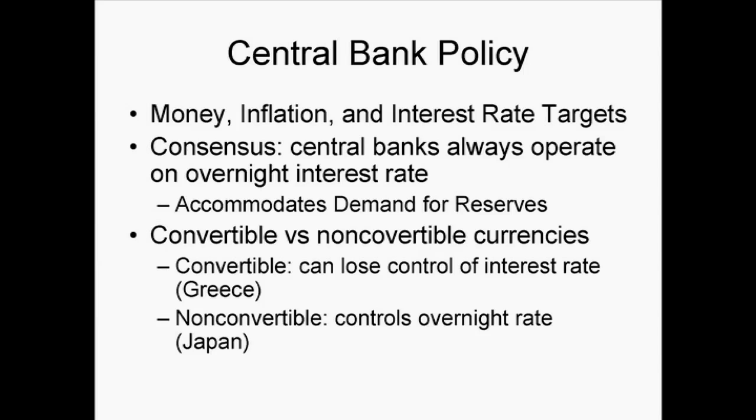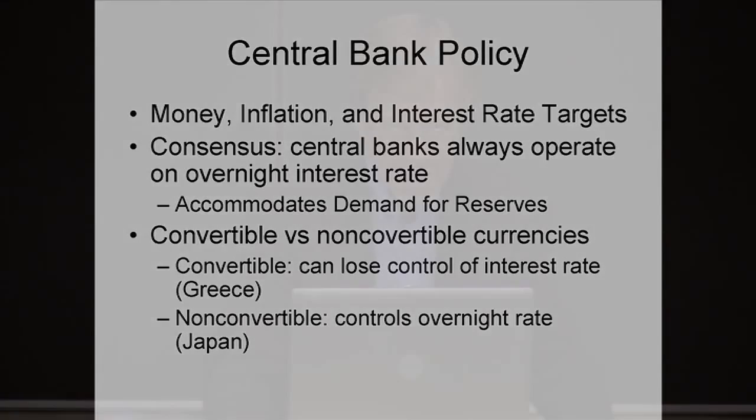We've had a long history of debate about what the central bank should do. Should it have a money target? An inflation target? Interest rate targets? The economists have finally reached a consensus — one that we discovered a long time ago — which is that central banks always operate with an overnight interest rate target. No matter what they tell you, that's what they're actually doing. And that means they have to accommodate exactly the demand for reserves or they'll miss their target. That is why they use bond sales or purchases to make sure banks have the right amount of currency reserves.